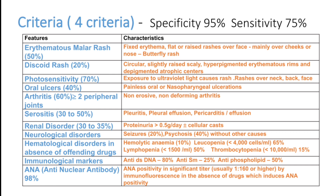Hematological disorders are seen in a large number of patients. Around 65% can have leukopenia, lymphopenia in 50%, hemolytic anemia in 10%, and thrombocytopenia in 15%. Immunological markers: anti-dsDNA is positive in 80%, anti-phospholipid antibodies in 50%, and anti-SM antibodies in 25%. ANA is highly positive — around 98% of patients — but ANA positivity alone does not confirm SLE. You need clinical findings plus anti-dsDNA positivity to make a diagnosis.